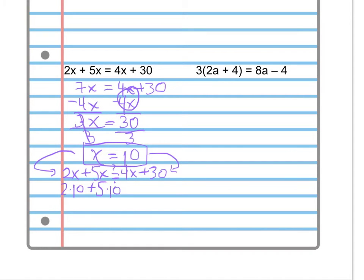And then we're not sure if that's equal. We're not going to claim it's equal. So we're just going to put a question mark equals 4 times 10 plus 30. In the next step we multiply 2 and 10 and get 20, plus 5 times 10 is 50. And again, we're not positive they're equal, so we're just making a question mark equals 4 times 10 is 40 plus 30.